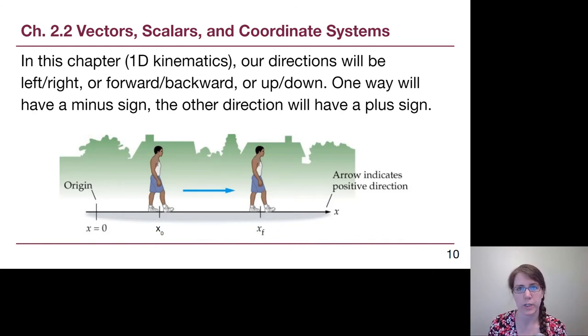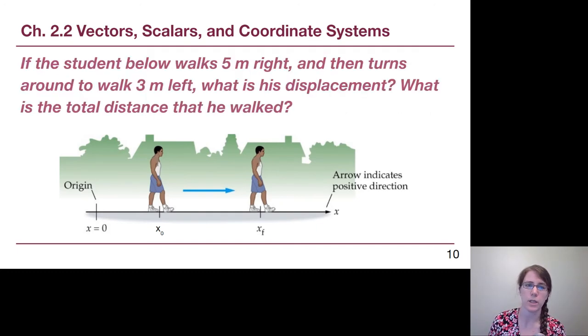Really conveniently for us, speed starts with an S and scalar starts with an S, so it's easy to remember. Velocity starts with a V and vector starts with a V. There's a pretty fun They Might Be Giants song that if you listen to it a couple of times, it'll play in your head whenever we ask about speed and velocity. In this chapter, our directions are always going to be left or right, forward or backwards, up or down. It's one dimensional motion. One of those directions will have a minus sign and the other will have a positive sign. By standard conventions, almost always we'll be seeing pictures where to the right is the positive direction, up is the positive direction, and forward is the positive direction. I want you to read through this question and write down your answers.